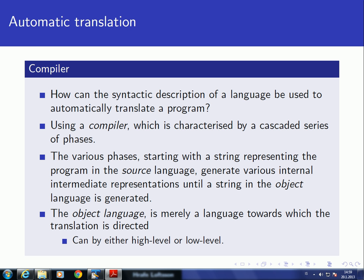A compiler comprises a series of different phases or modules. These different modules start with the string representing the program in the source language, and then generate various internal intermediate representations until finally we have a string in the object language. The object language can be of various forms: it could be high level, low level, or somewhere in between — middle level.